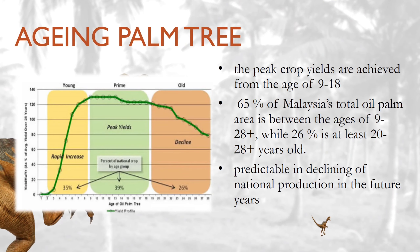The oil palm is potentially capable of producing economically viable volumes of fresh fruit bunches over a lifespan of 30 years. However, the peak crop yields are achieved from the age of 9 to 18 years and gradually decline after that.